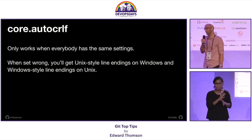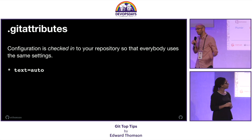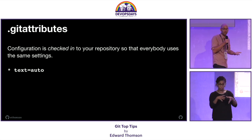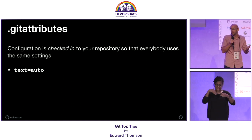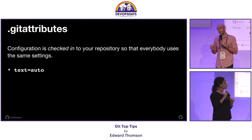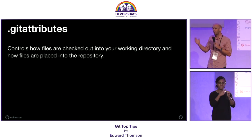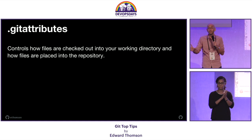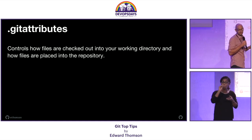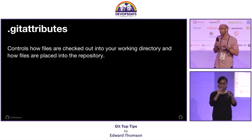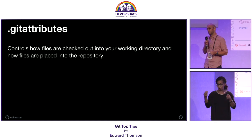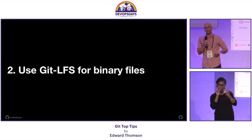The nice thing about .gitattributes is you check it into the repository, so everybody using that repository has the same settings. I recommend `* text=auto` — that means the native line ending configuration on every platform. But fundamentally, I don't care what you put in there as long as you put something in there so that everybody agrees. That way, everybody has the same information going into the repository and you'll never run git status and see phantom changes.